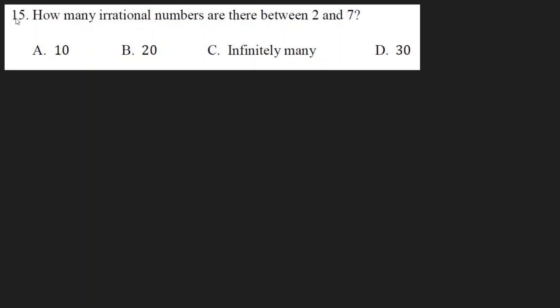How many irrational numbers are there between 2 and 7? How many rational numbers are there between 2 and 7? The solution follows from the definitions.